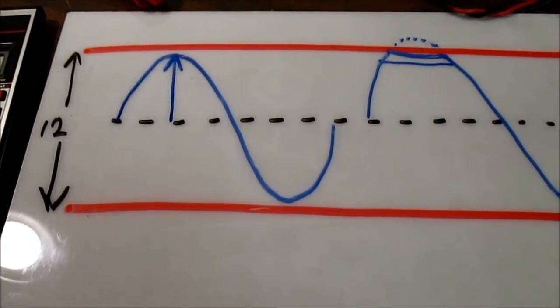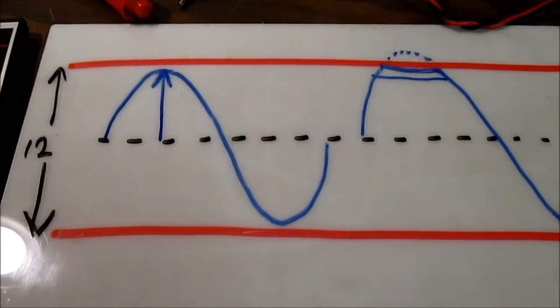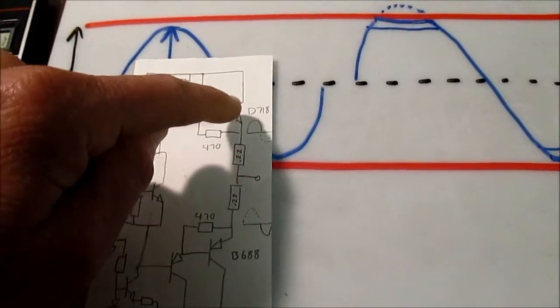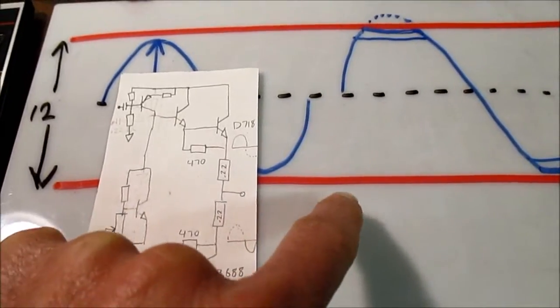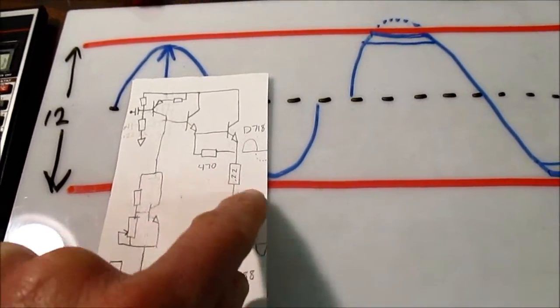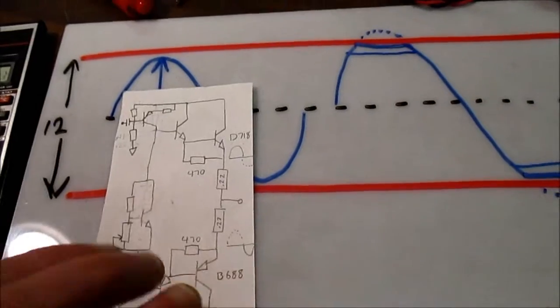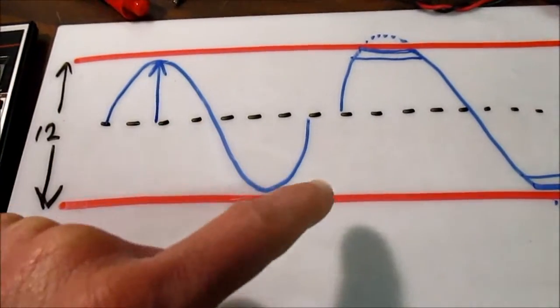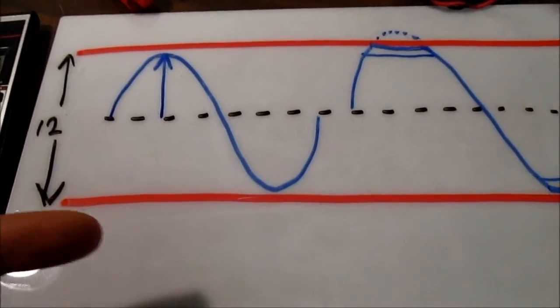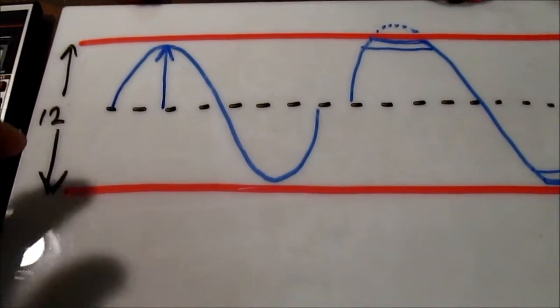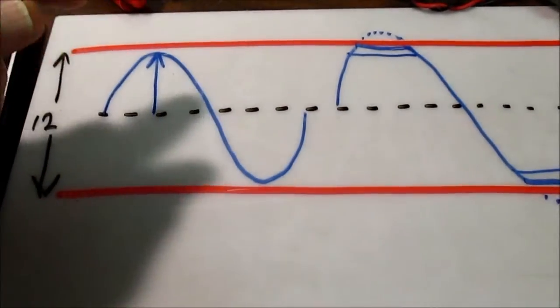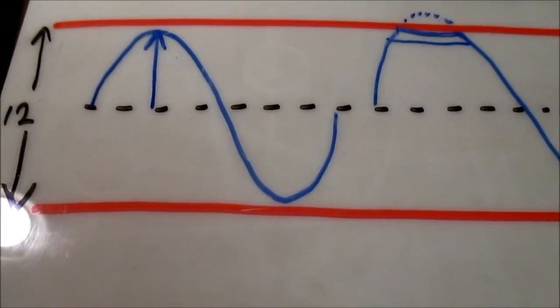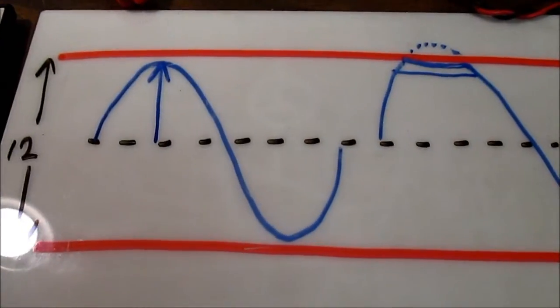Another way is to use a bridge type configuration. That's where you take two push pull amplifiers, put them back to back, put the load in between them, inverse the signal on one of the amplifiers. You double your output voltage swing into the same impedance. Because you double the voltage, you double the current, therefore you quadruple your output power.